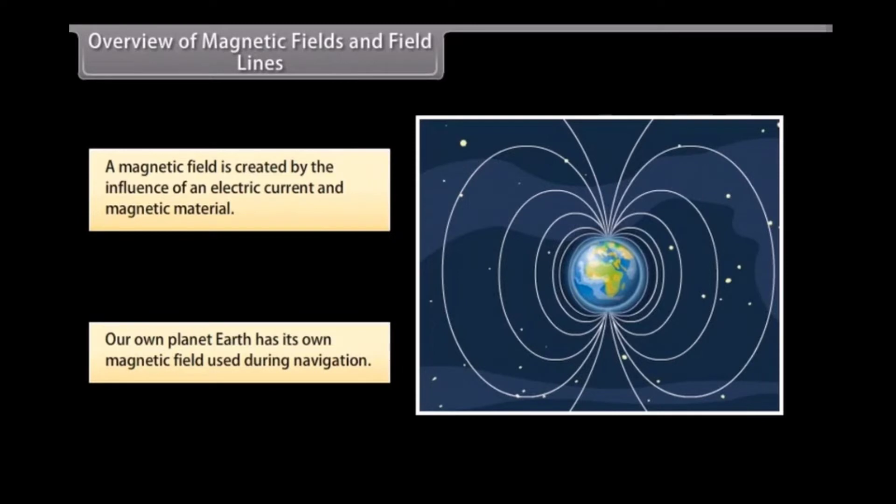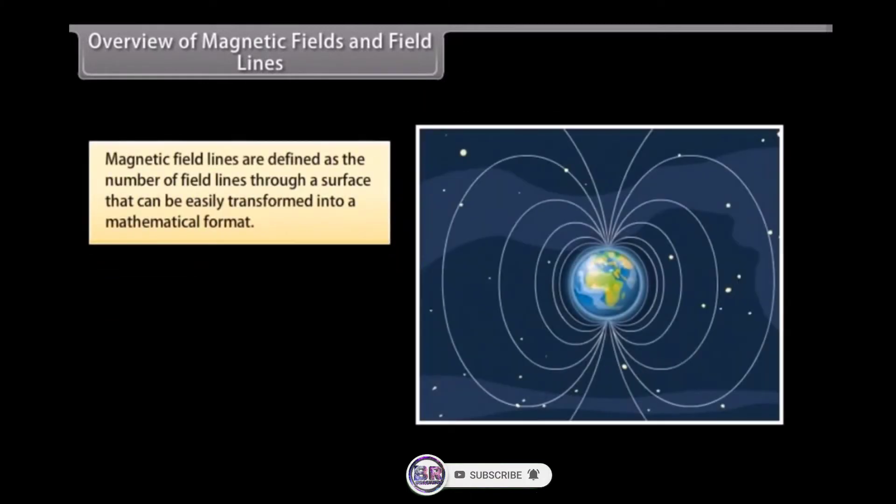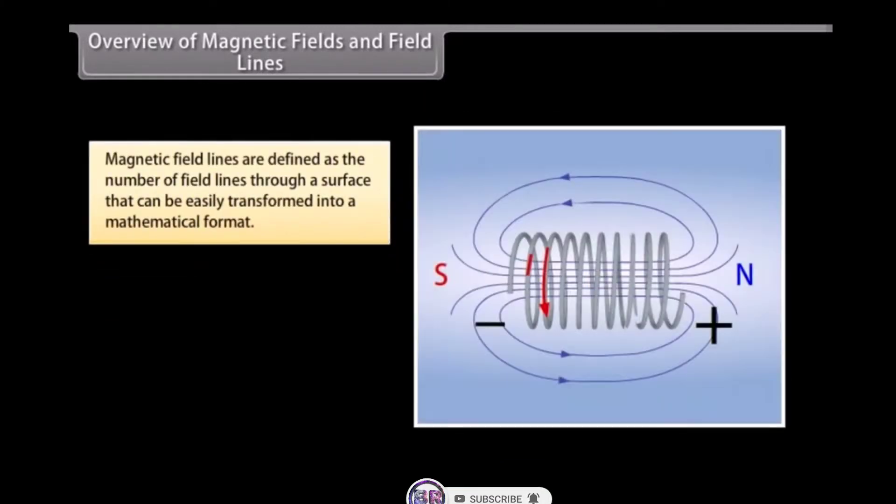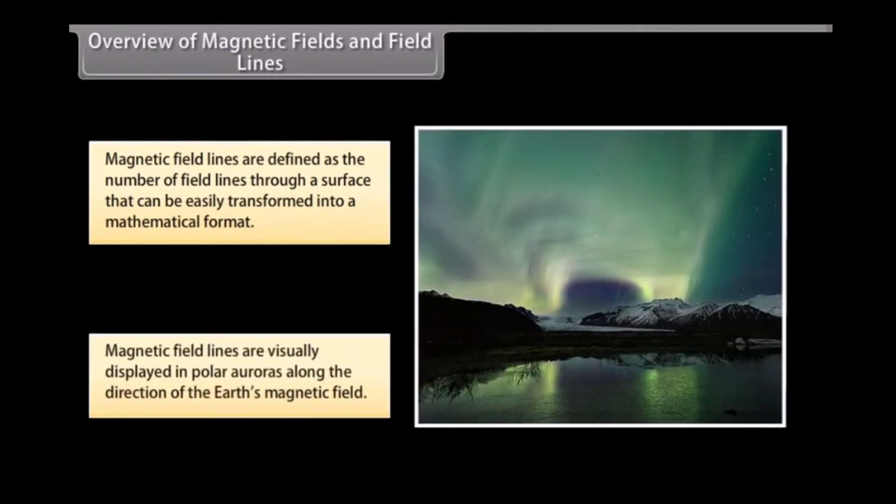Magnetic fields are also used in electric devices such as transformers. Magnetic field lines can be compared to the constant altitude lines that are visible on a map. Magnetic field lines help in stating simple concepts of magnetism easily. These are defined as the number of field lines through a surface that can be easily transformed into a mathematical format. Magnetic field lines are visually displayed in polar auroras where visible streaks of lines are created along the direction of Earth's magnetic field.